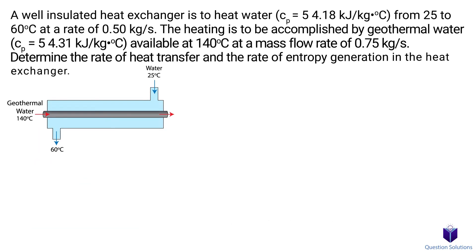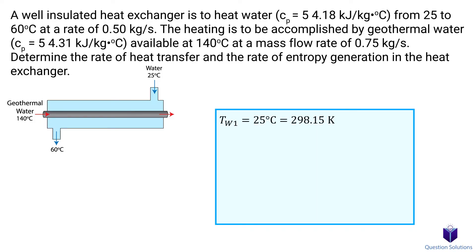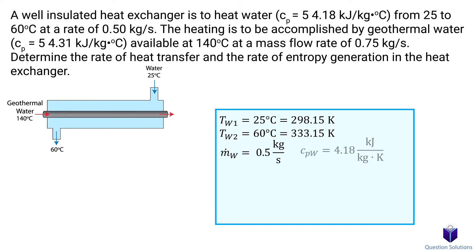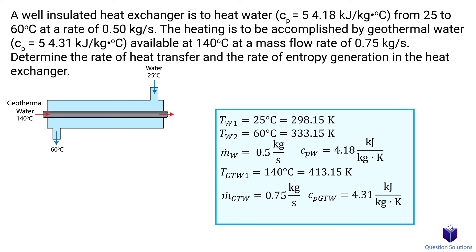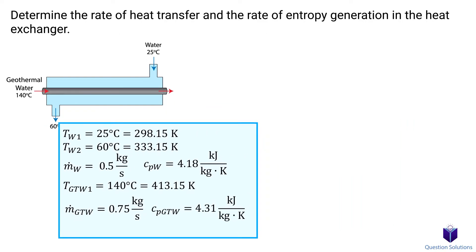Let's take a look at this problem, where we have a heat exchanger heating up water using geothermal water. We need to find the rate of heat transfer and the rate of entropy generation. The water to be heated must go from 25 to 60°C at a rate of 0.5 kg/s, and we're given the constant pressure specific heat for the water. The geothermal water is at 140°C and flows at 0.75 kg/s, with its specific heat also given.